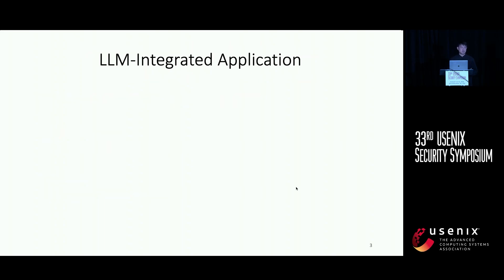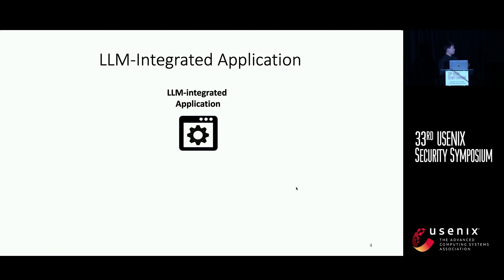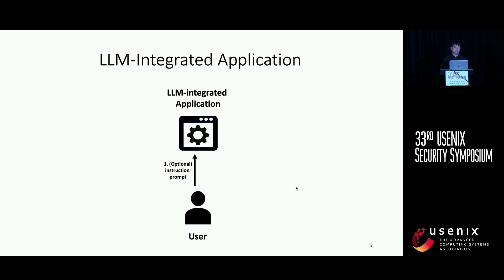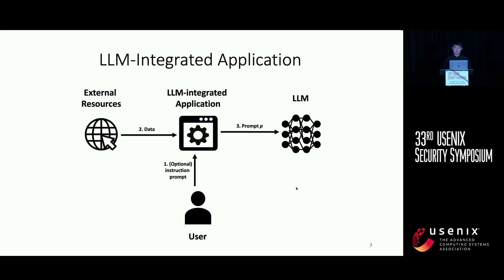I'll use a figure to illustrate how the LLM-integrated application works in general. The first step is for the application to take the instruction prompt from the user — this step is optional because the application can have the instruction on its own. The second step is for the application to take data from external resources, which can be either trusted or untrusted. Then the application constructs the prompt, sends it to the back-end large language model, obtains the response, and returns it to the user.